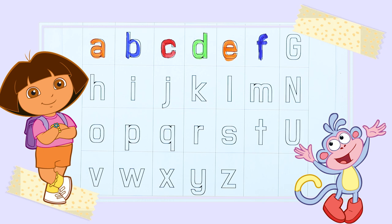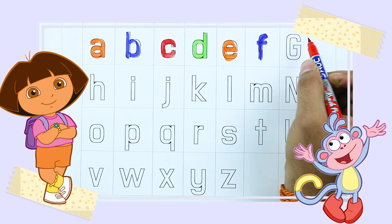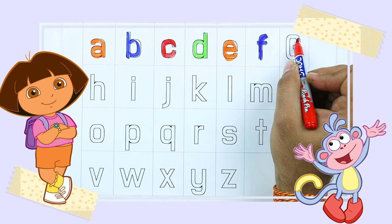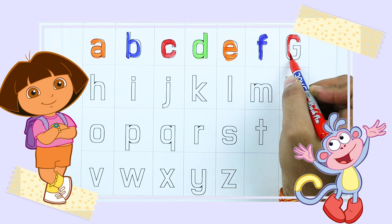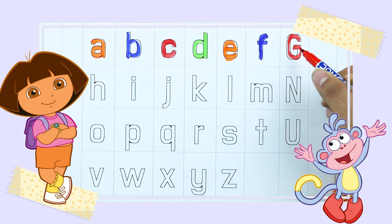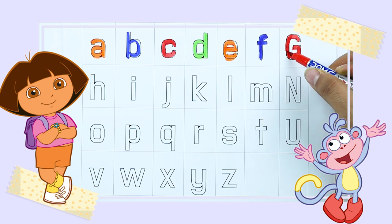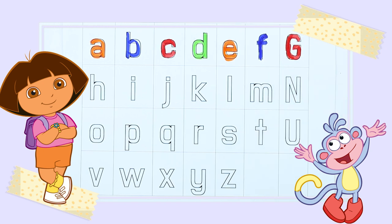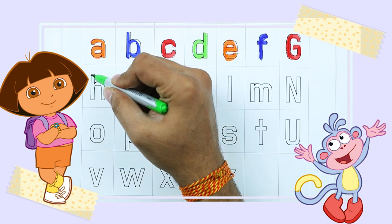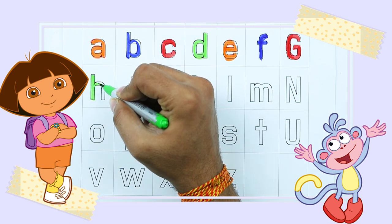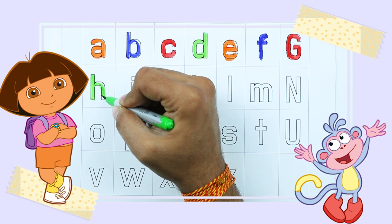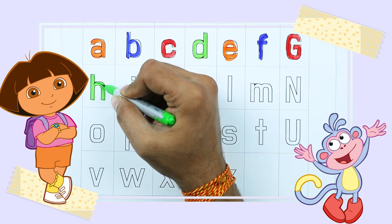G. G for goat. It's G. G for goat. H. H for hen. It's H. H for hen.